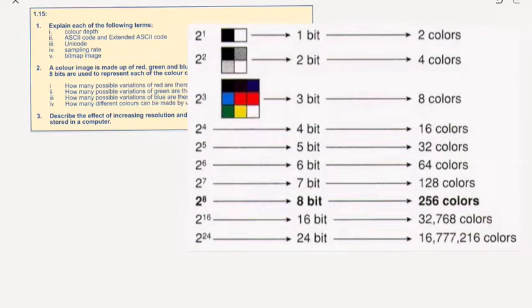We have a representation of color depth and as you can see we have 2 to the 1 which would give us two colors, 2 to the 2 which would give us four colors, 2 to the 3 which would give us eight colors, 2 to the 4 sixteen. So as you can see it's doubling every time. Well what does that mean? For example, the first one, one bit of color equals two colors.